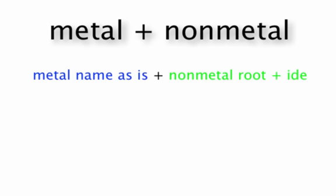The first ionic classification we're going over is metal and a non-metal. A metal is on the left side of the periodic table and a non-metal on the right. You put metal name as is. For the non-metal, you keep the non-metal root and change the ending to -ide. Let's do some examples.